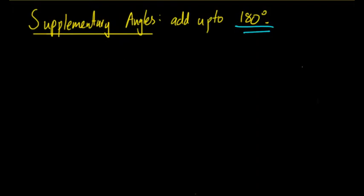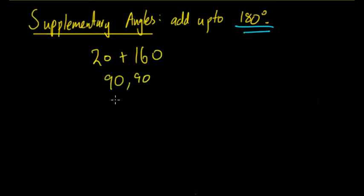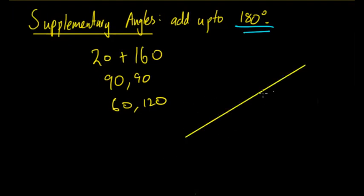Supplementary angles could include 20 and 160, 90 and 90, 60 and 120, etc. The two numbers add up to 180 degrees, and the most important feature of supplementary angles is that when they add up they form a straight line, or 180 degrees.